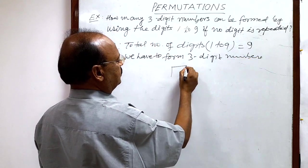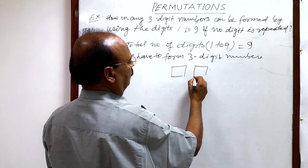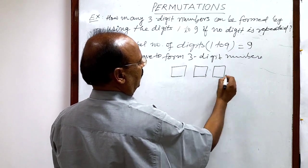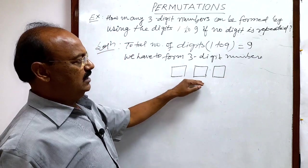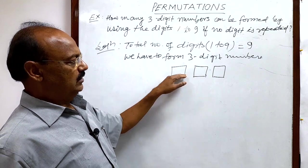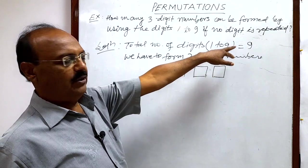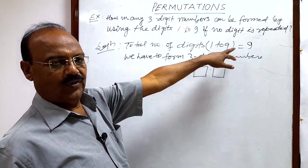Suppose we have to fill up these three places for three-digit numbers with the help of 9 digits.